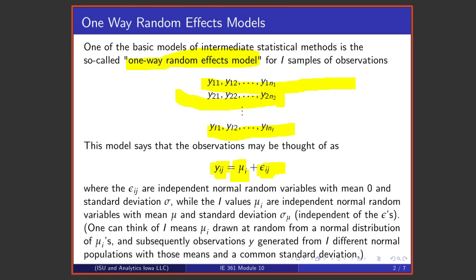and subsequently observations generated from i different normal populations with those means and a common standard deviation. That's the so-called one-way random effects model.